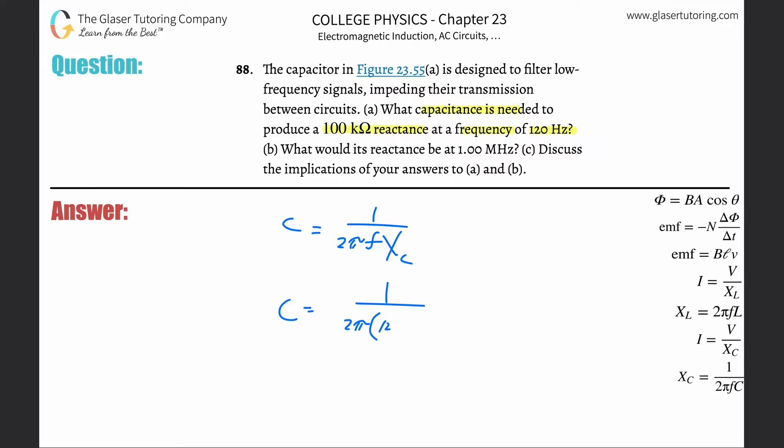Just leave it alone, plug in the 120, and plug in the capacitive reactance. That's 100 kiloohms, but be careful - we need an ohm, so take the 100 and multiply by 10 to the third, or basically a hundred thousand.